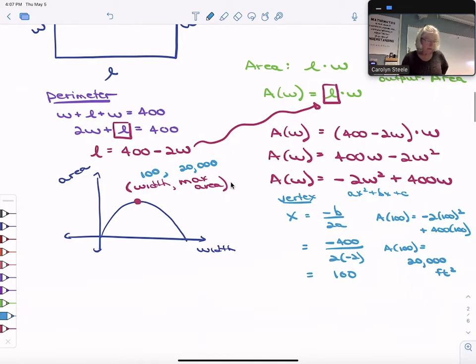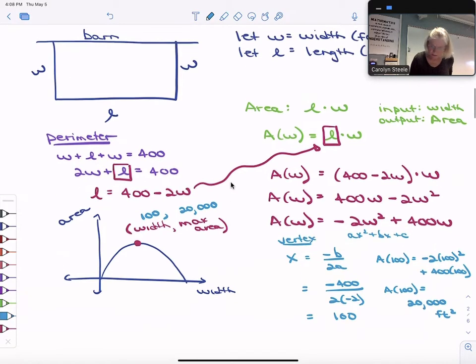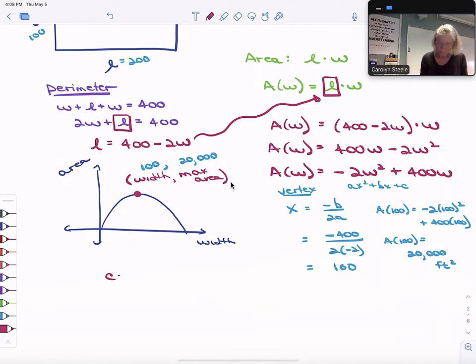So what that's telling us is that, oh, let's just think. Okay, wait. This is the width, 100. So if we want to know our length, it's 400, that's going to be 200, right, because it has to all add up to 400. So now we know that our corral, if it is 100 by 200 feet, this is our width, and that's our length, we're going to maximize our area.